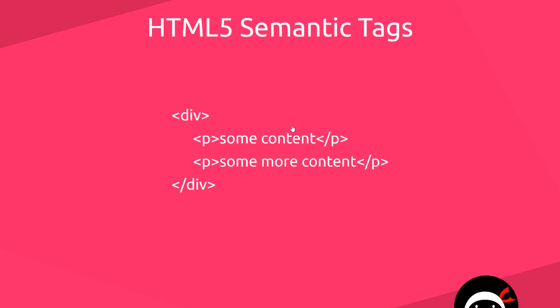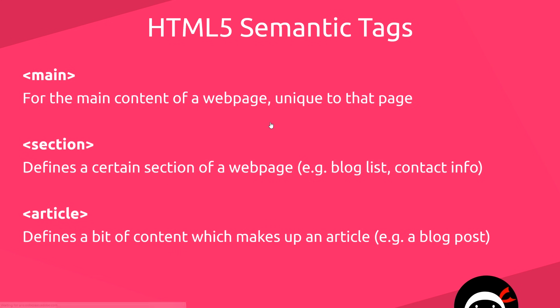HTML5 semantic tags aim to make our code more meaningful and descriptive. So now instead of a div, we could use an article tag — this is an HTML5 semantic tag that tells the browser a bit more about what the content is. Let's have a look at the different semantic tags that came with HTML5. First, we have the main tag, which is for the main content of a web page — the part that's unique to that page and not repeated on others, like the navigation.